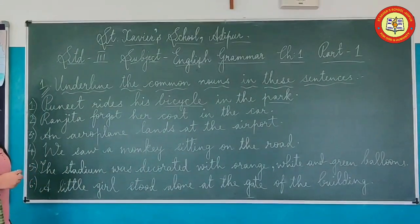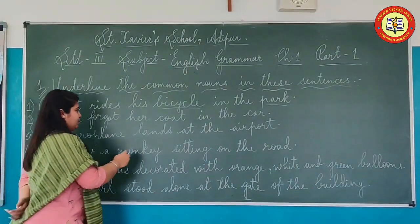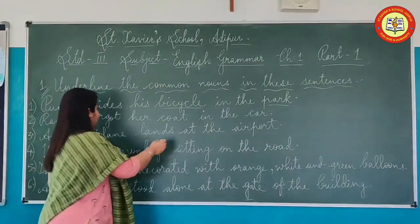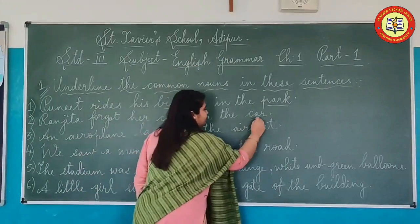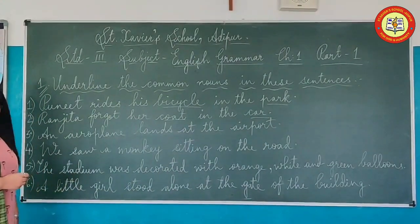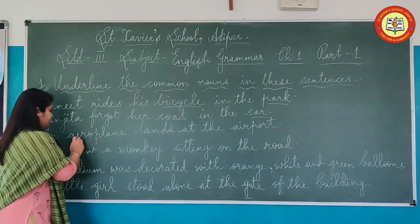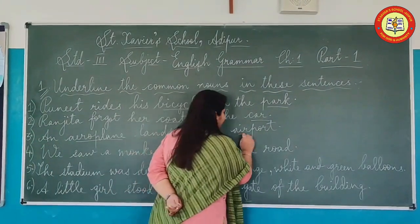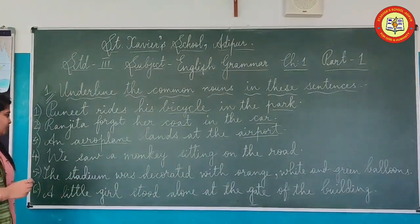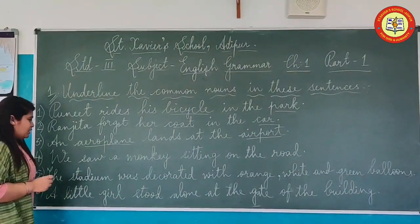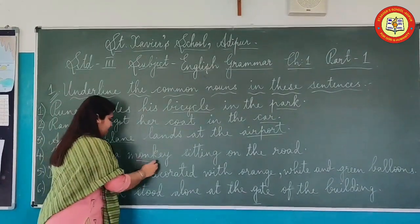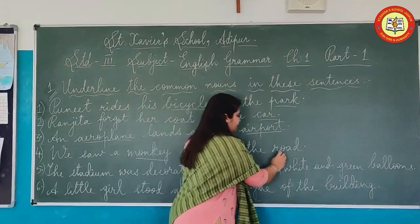Second sentence: 'Ranjita forgot her coat in the car.' Here, first of all, Ranjita will not come as it is a proper noun. The common nouns are coat and car. Third sentence: 'An aeroplane lands at the airport.' So here, aeroplane and airport will be the common nouns, because we are not known with the specific names of these. Fourth sentence: 'We saw a monkey sitting on the road.' First one will be monkey and then road.